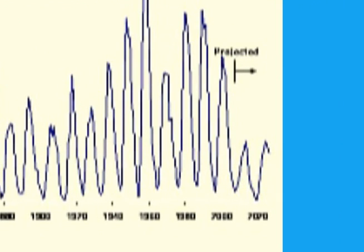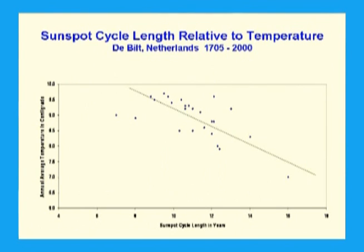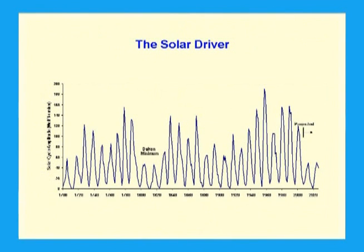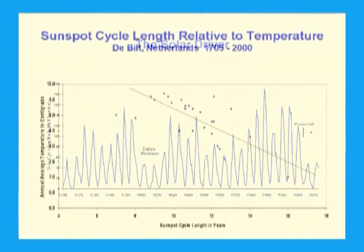There is a better correlation between temperature and solar cycle length rather than with solar cycle amplitude. I produced this graph using data from De Bilt in the Netherlands. The slope of the line is 0.6 degrees centigrade per year of solar cycle length. The average length of a solar cycle over the last few hundred years is 10.7 years and has ranged from 7 years to 16 years. A strong relationship between solar cycle length and temperature is seen in other data sets.